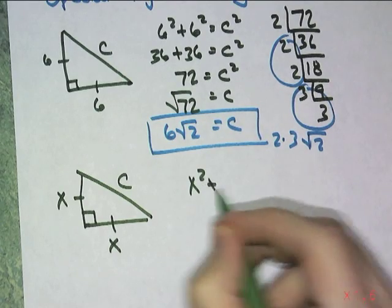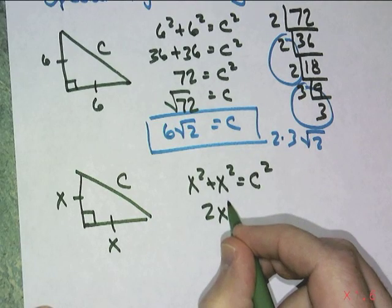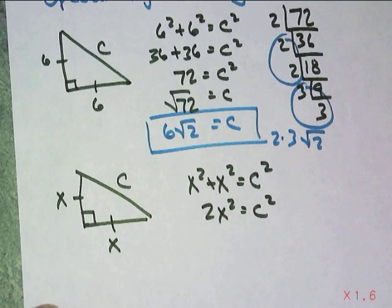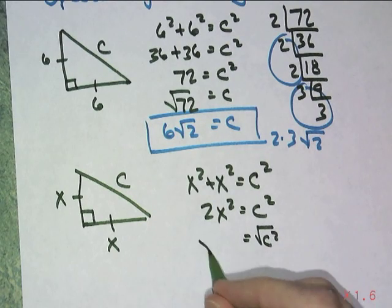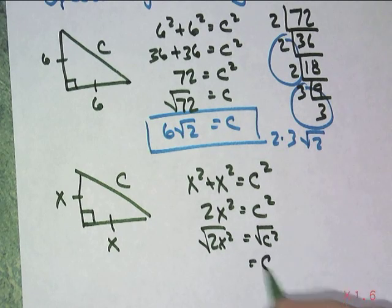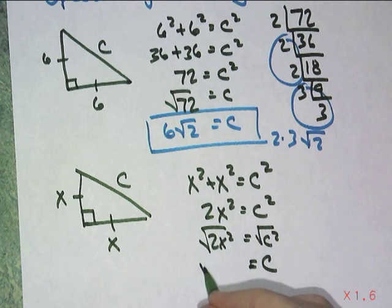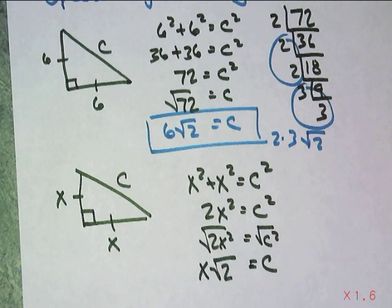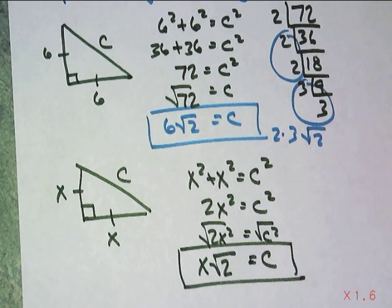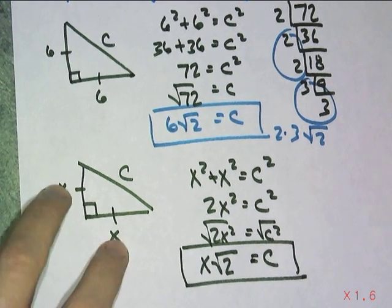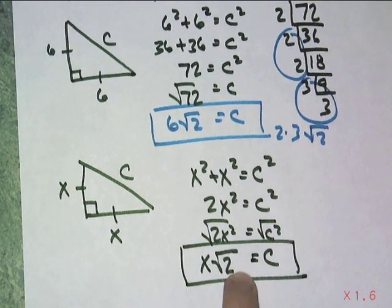Go about it the same way. So x squared plus x squared equals c squared. And x squared plus x squared is 2x squared equals c squared. And because we're talking about positive roots, we can square root both sides, giving me a c on this side. This side, the x times x would simplify and that would break out, leaving me with a root 2 underneath the radical.